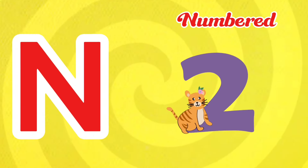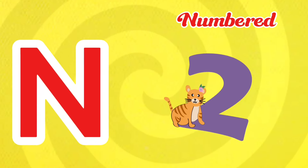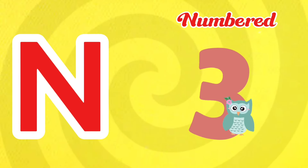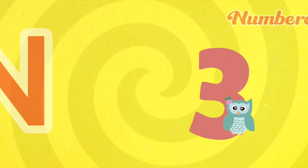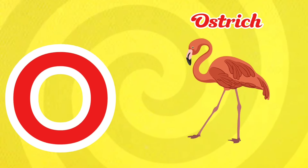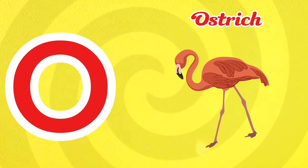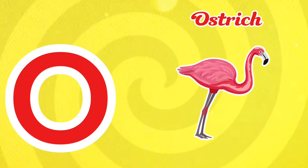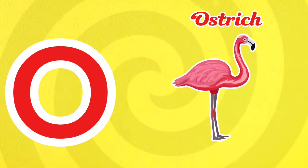N is for Newt. N. Newt. N is for Newt. N. O is for Ostrich. O. Ostrich. O is for Ostrich. O.